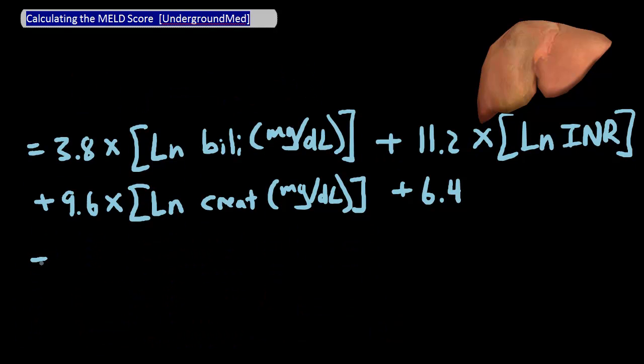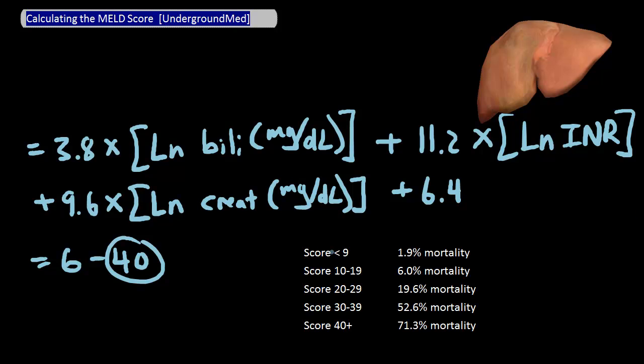The above equation will spit out a score between 6 and 40, with a higher score associated with higher mortality in the next 3 months. The stratification between MELD score and 3-month mortality for hospitalized patients is as seen here. So MELD score under 9 is associated with a 1.9% mortality in the next 3 months, a score between 10 and 19, a 6% mortality, and so on and so forth. And remember, this is all expected mortality in the next 3 months only.